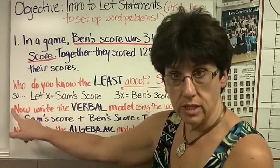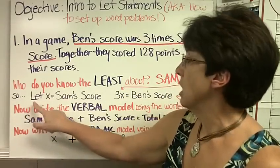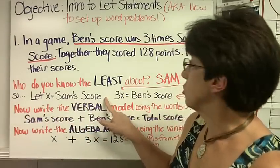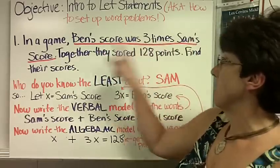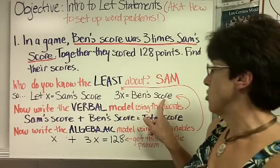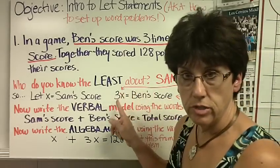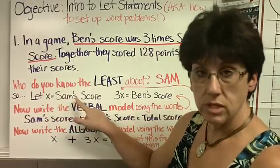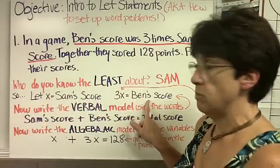So, this is what we do. We write down, this is what you need to write down, let x equals Sam's score. Now, what was Ben's score? Three times Sam's score, so 3x equals Ben's score. Don't pay attention to the arrows yet. So, you've written down this problem. Let x equals Sam's score, 3x equals Ben's score.